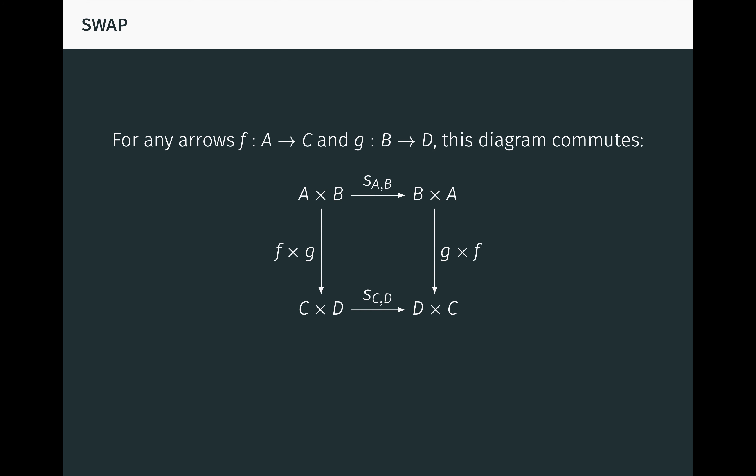For any arrows f from A to C and g from B to D, this diagram commutes. On top, the swap arrow SAB maps from A times B to B times A. On bottom, the swap arrow SCD maps from C times D to D times C.